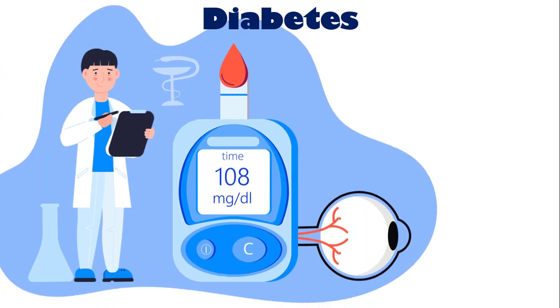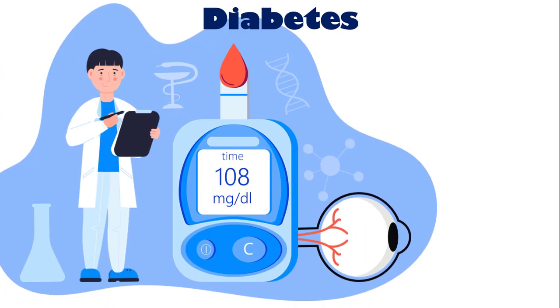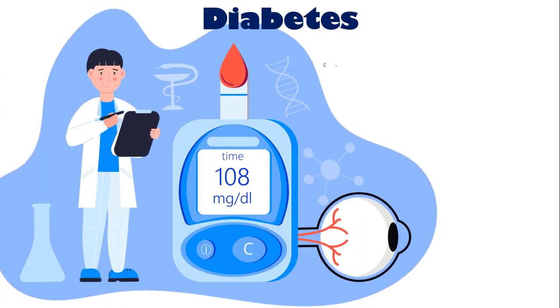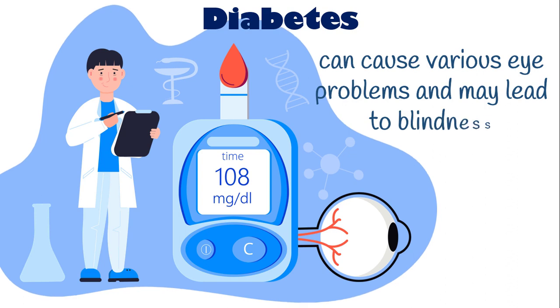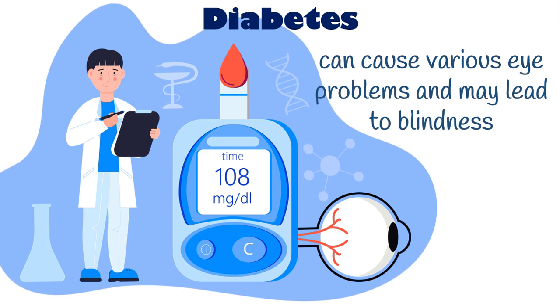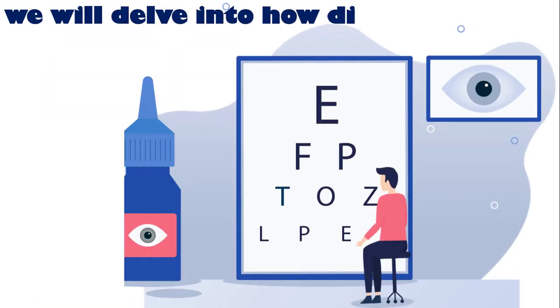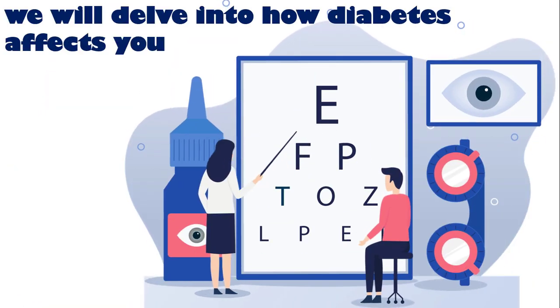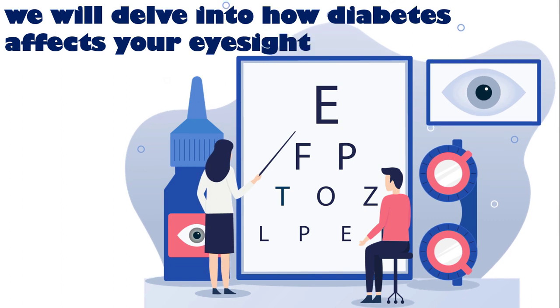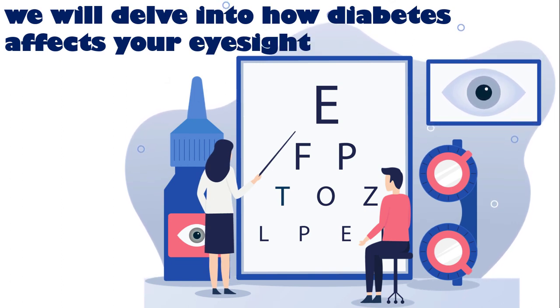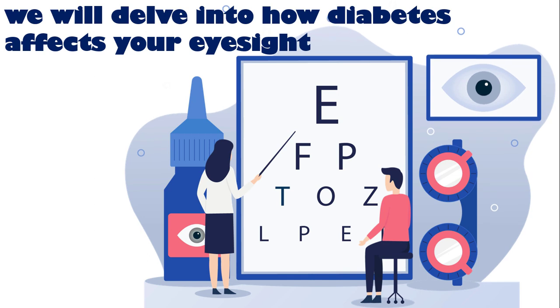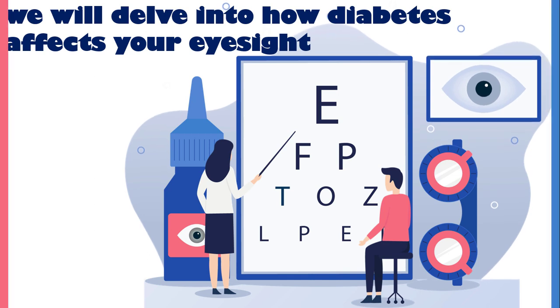Diabetes, characterized by high blood sugar levels, can cause various eye problems and may lead to blindness. In this video, we will delve into how diabetes affects your eyesight and explore the mechanisms behind these eye issues. So, let's jump right in.